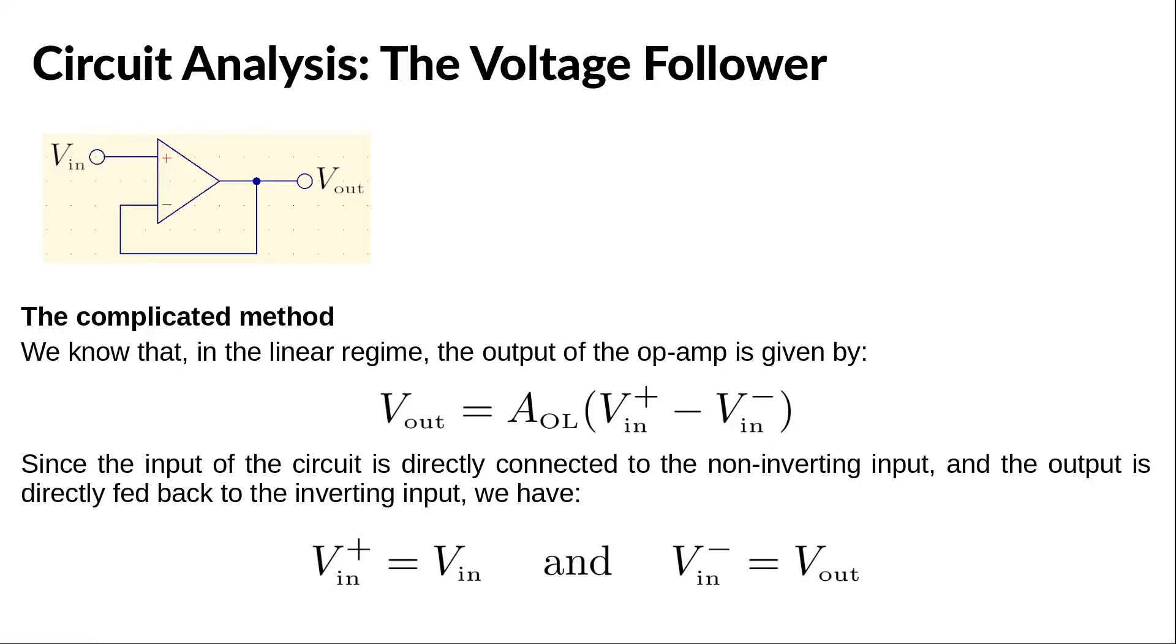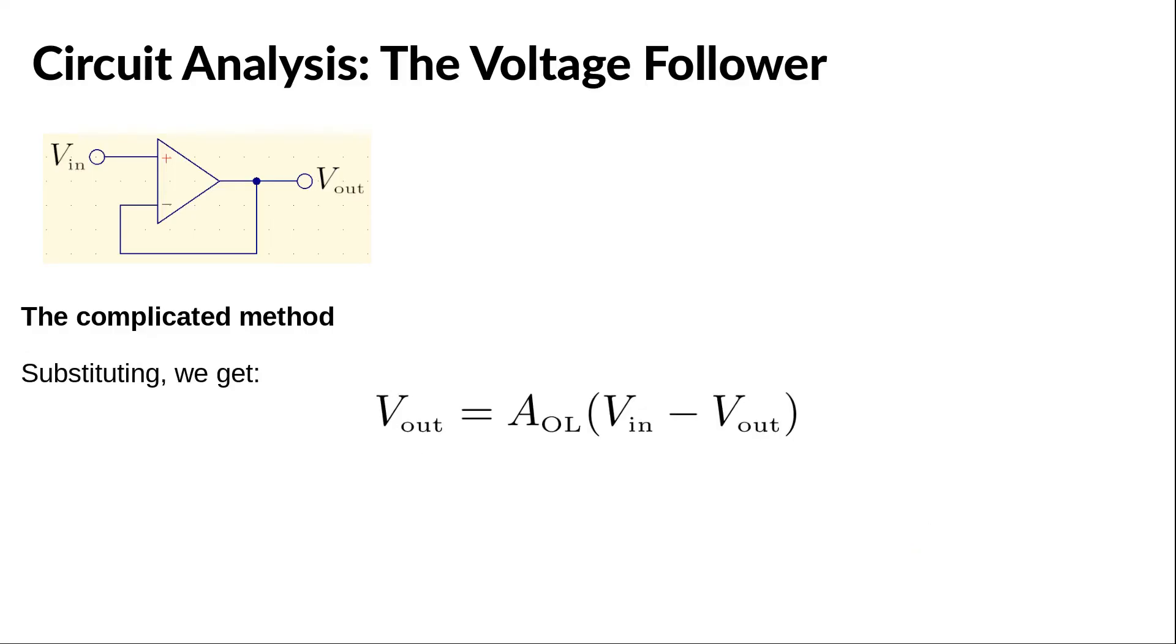So, we can take these two expressions and substitute them into the first equation. If we do this, we obtain an equation with the single unknown V out. We could stop here,